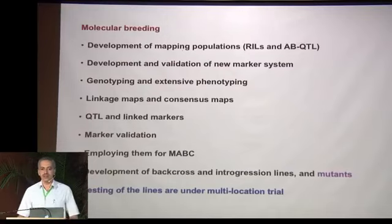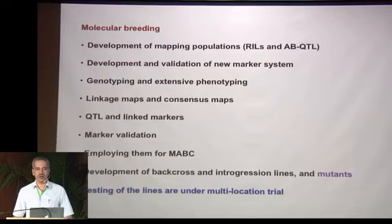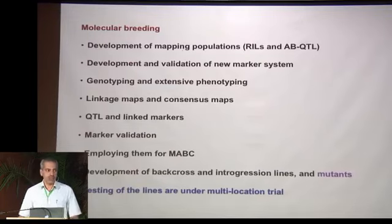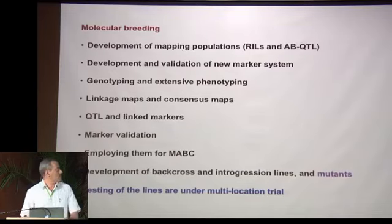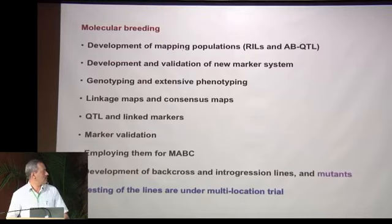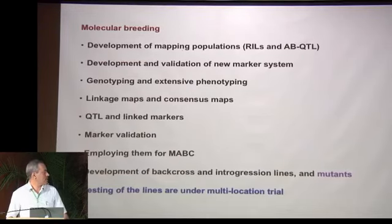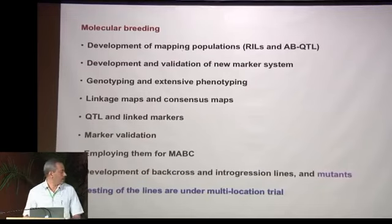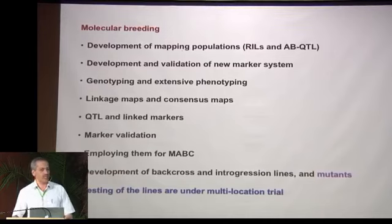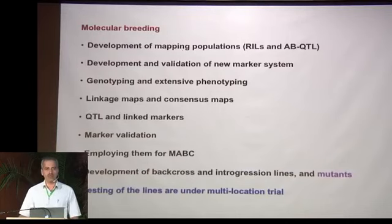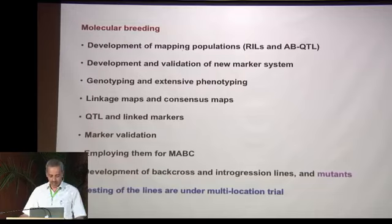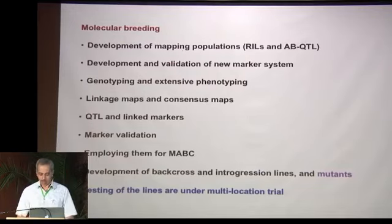The second phase is actual utilization of those markers or QTLs for plant breeding work. These are the things we have done in molecular breeding for foliar disease resistance and oleate trait — starting from development of mapping populations, development and validation of new marker systems, genotyping and extensive phenotyping, linkage maps and consensus maps, QTLs, linked markers, marker validation, and employing them for MABC, development of backcross lines, introgression lines, and deriving mutants. The molecular breeding is a complete story for groundnut.